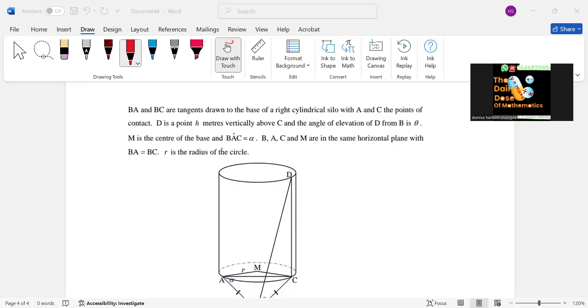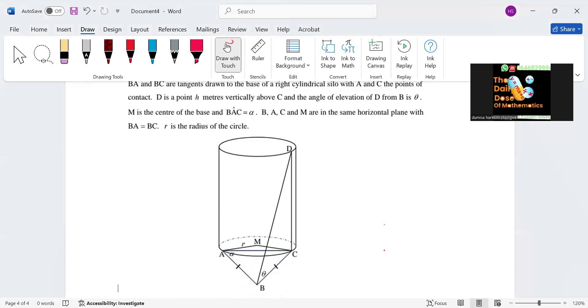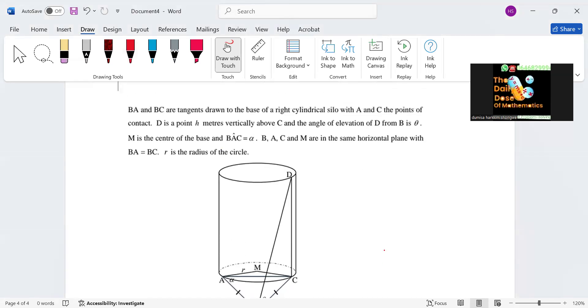Okay, they say we have AB and BC tangents to a cylinder, and then we have AB and BC which are drawn to the base of a right cylinder silo with A and C as the points of contact.